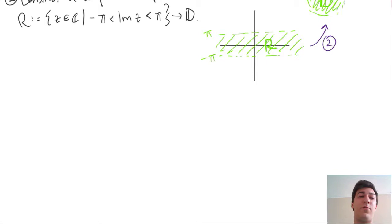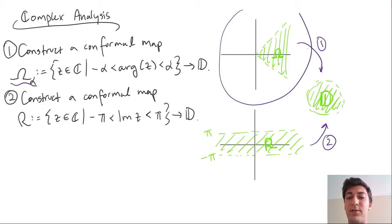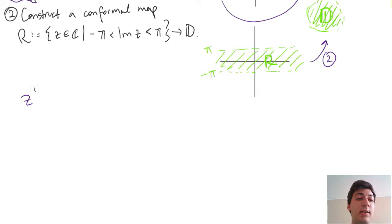So let's dive into the first problem. Now looking at this region, we might be tempted to say z to the beta, some beta, kind of fans out regions, or in another sense, it might contract them. Let's remind ourselves why that is.